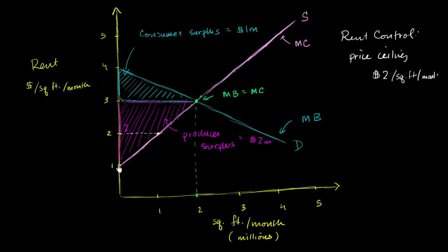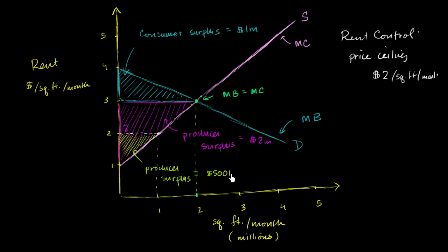From the producer's point of view, it doesn't make sense for them to rent out more than 1 million square feet per month, because any extra square foot above that has a marginal cost greater than what they're going to get. So the producers are just going to stop there. The producer surplus is going to be the area of this triangle — 1 dollar times 1 million times one-half — so this is now a new producer surplus under rent control of $500,000. We see that rent control immediately hit the producers pretty hard; the producer surplus has gone down dramatically.